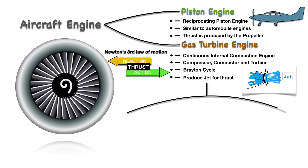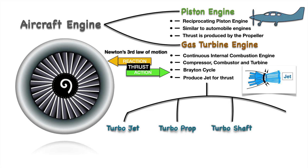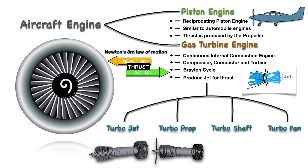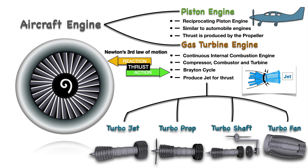The gas turbine engine has four basic types: turbojet, turboprop, turboshaft, and turbofan. We will just discuss turbofan for this video as it is the most common type in the aircraft industry.